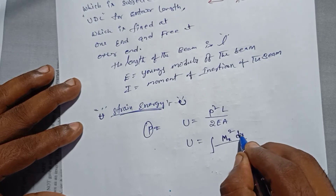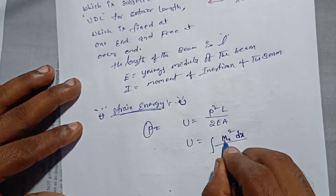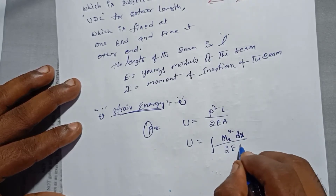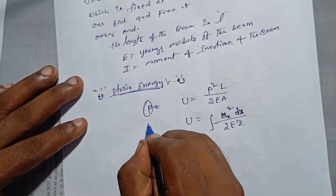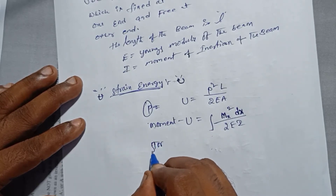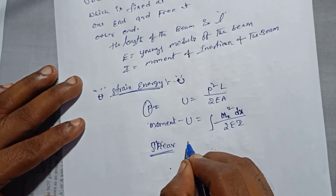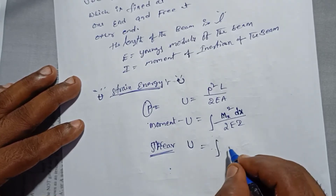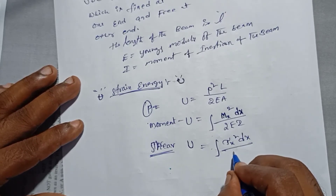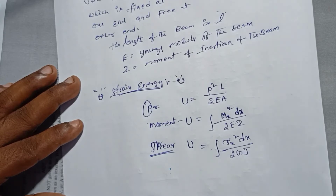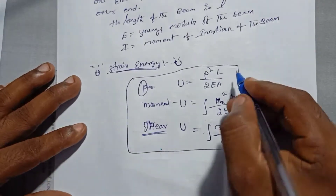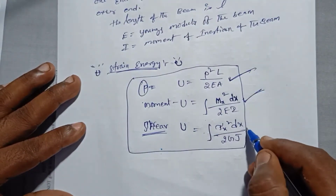For a small length dx, the bending moment related formula gives strain energy as the integral of M²dx / 2EI over the total length. The third formula, related to torsion and shear, gives strain energy as the integral of τx² dx / 2GJ. These are the three formulas for calculating strain energy — for axial load, bending moment, and shear stress respectively.